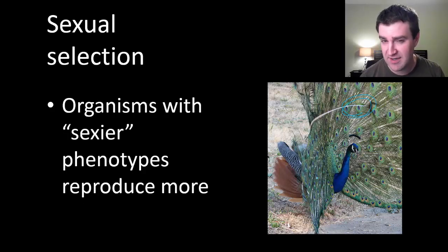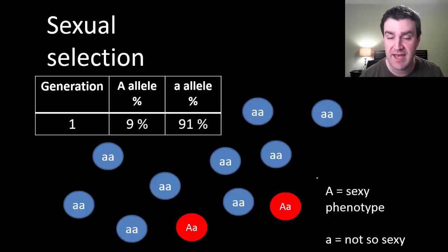What it's probably doing instead is being attractive to the female peahens of the species and helping those individuals reproduce more. If we imagine my imaginary population again, maybe there are just a few individuals at first who happen to have phenotypes that are more attractive to members of the opposite sex.